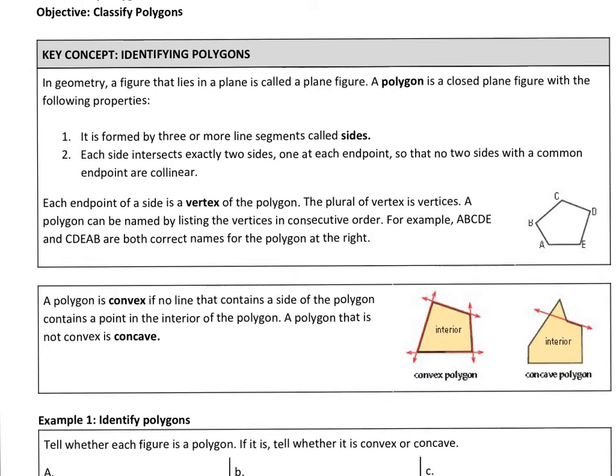In geometry, a figure that lies in a plane is called a plane figure - a two-dimensional figure. So circles, squares, triangles, rectangles, those are all plane figures. A polygon is a closed plane figure with the following properties.